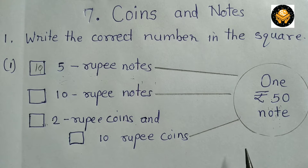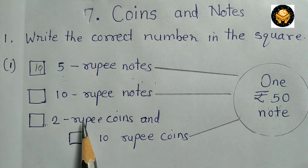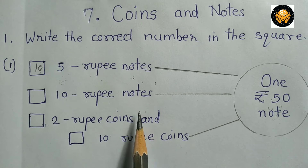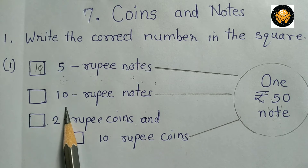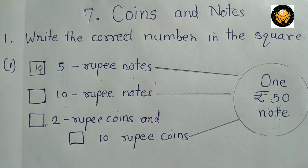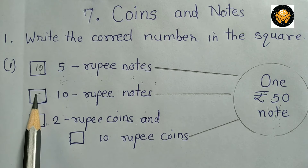Now let's find 50 rupees change in the form of 10 rupee notes. Using the table of 10: 10 fives are 50. So 5 ten-rupee notes are equal to 50 rupees.